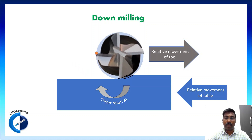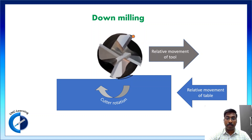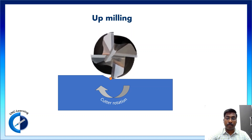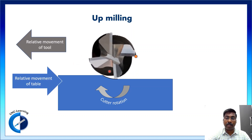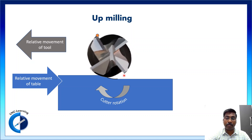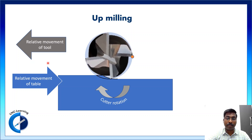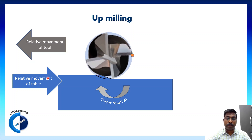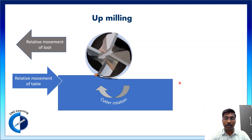Now we will look at up milling. In up milling, the cutter rotation is the same, but the relative movement of the tool is in the opposite direction. The relative movement of the table would correspondingly be in the other direction as well.